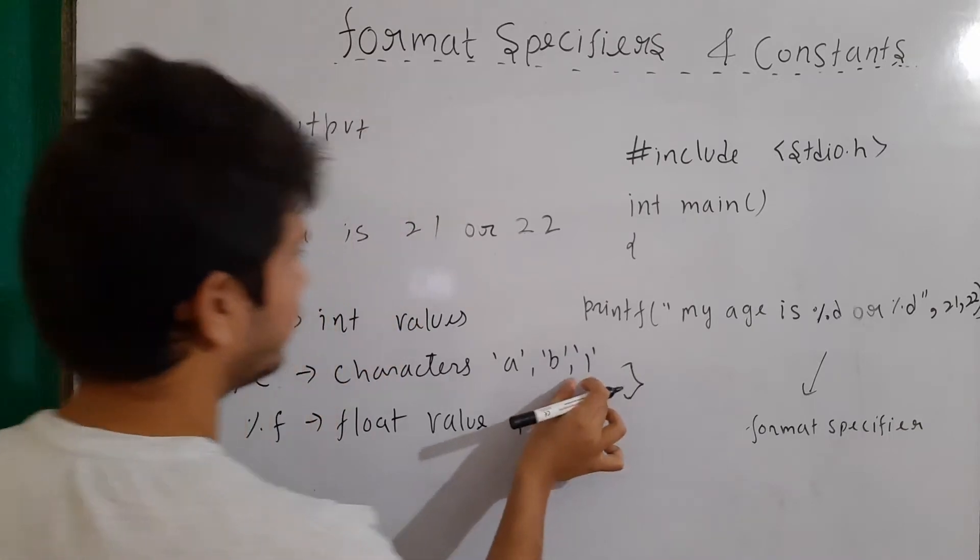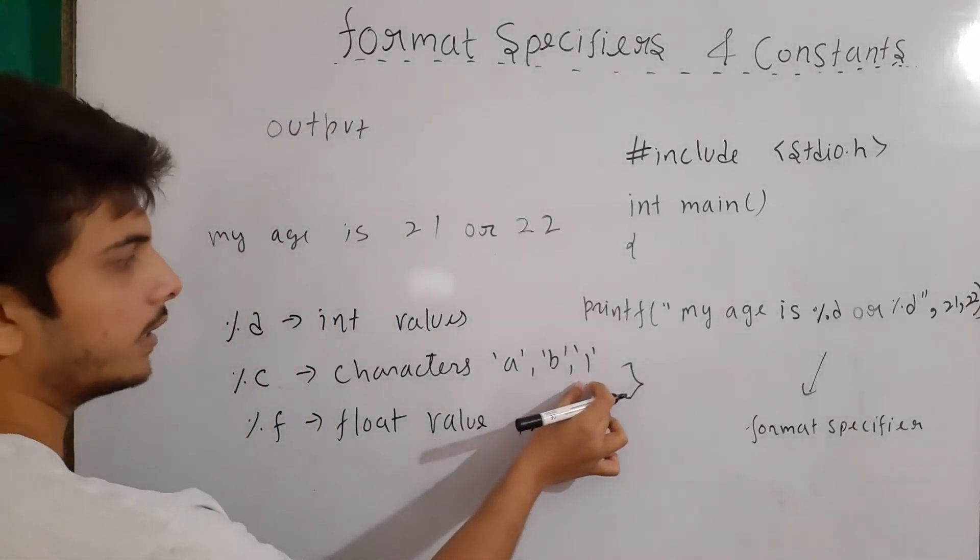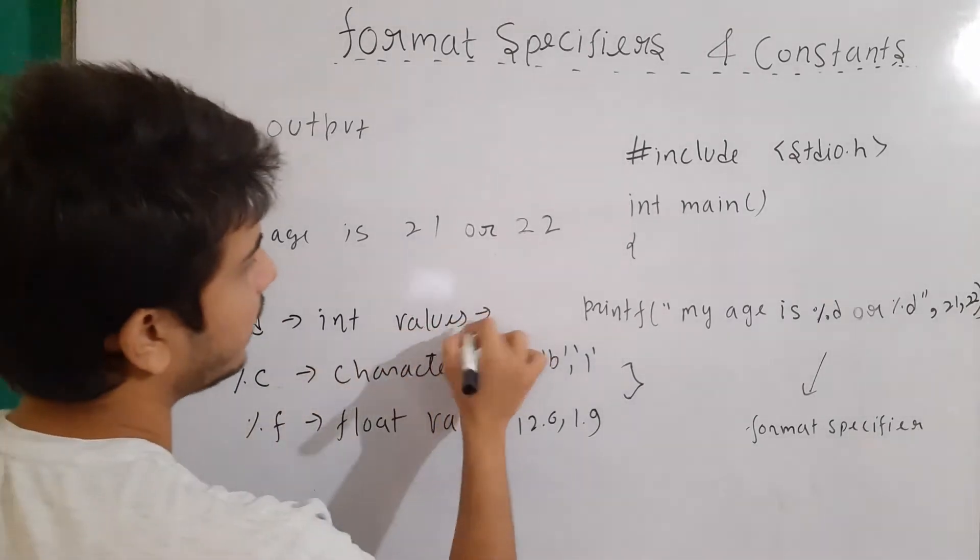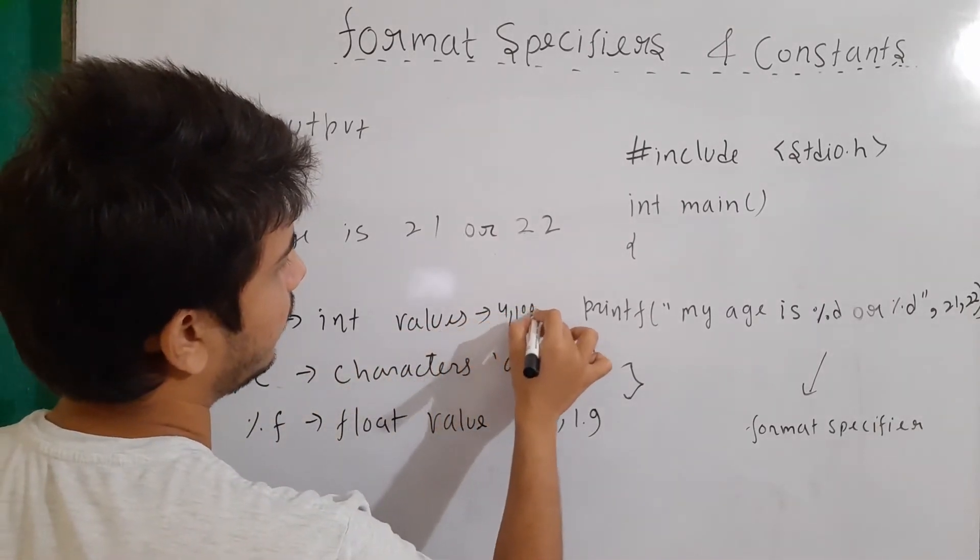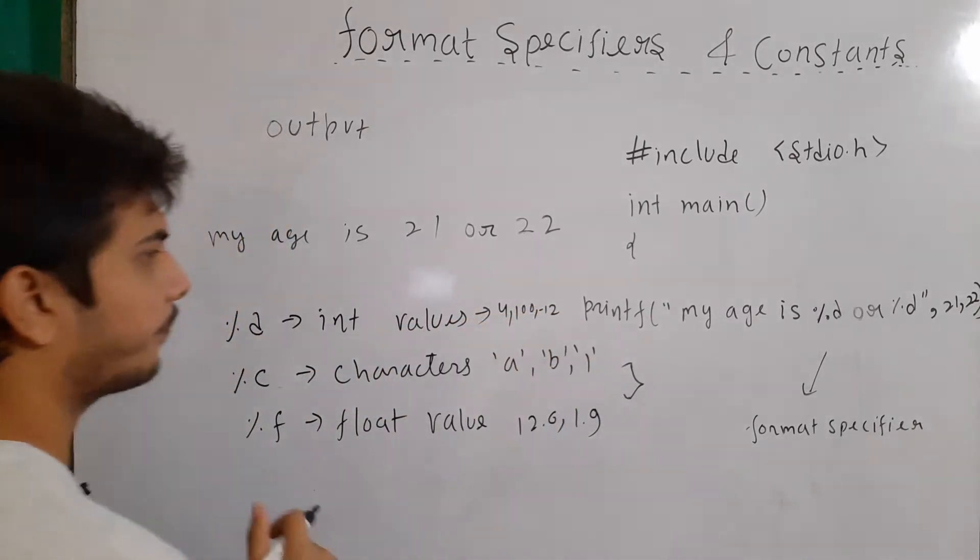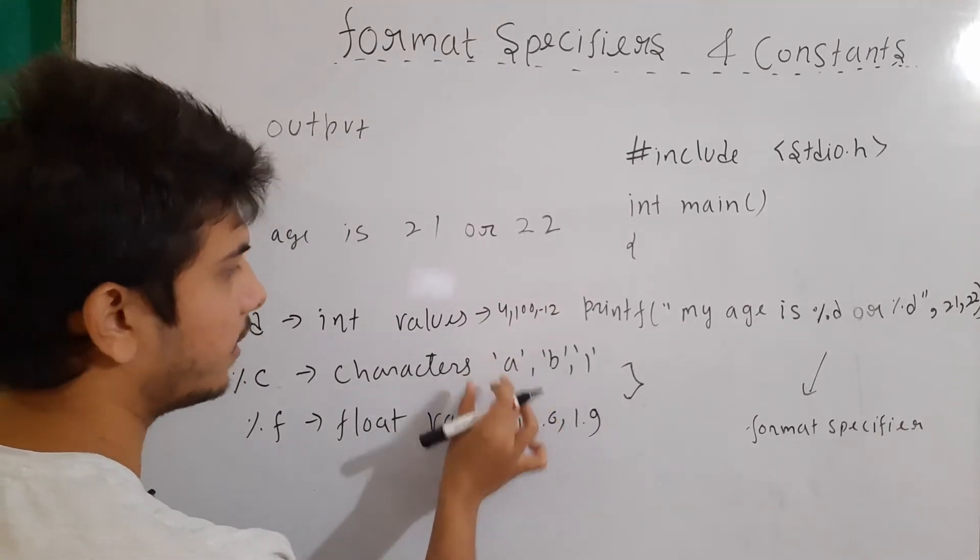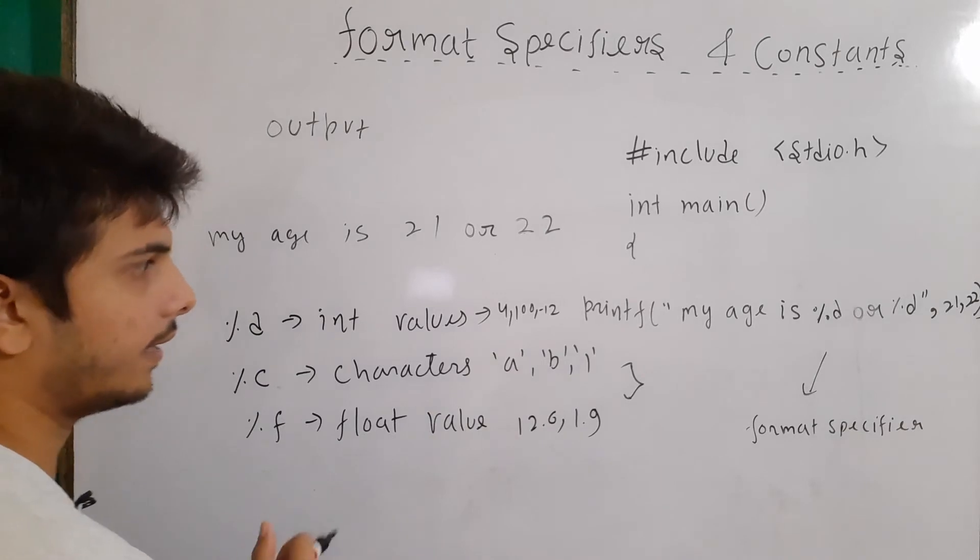For example, this will also be treated as the character not integer because it is inside a single quote. And integer values like 400, minus 12. Note that in character, there is only one character inside the single quote, there cannot be multiple characters.